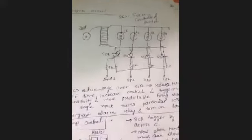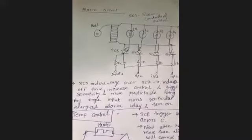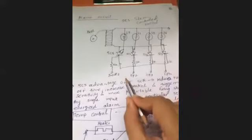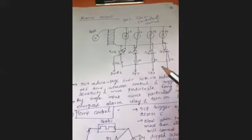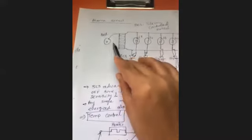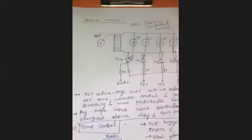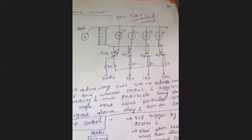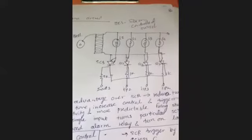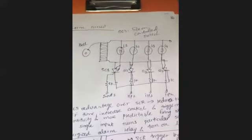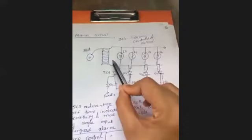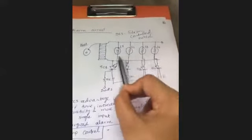Next is the alarm circuit. This alarm measures any parameter — the input could be temperature, level, or flow. When the output parameter goes out of the set limit, the alarm activates, turning on a bell and a lamp as indicators.